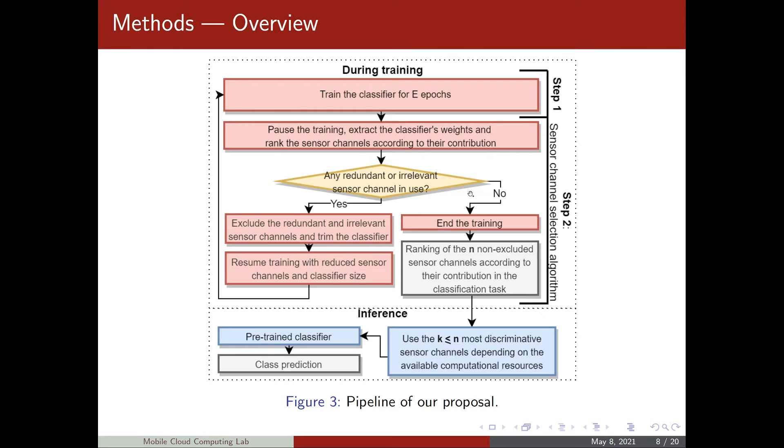When there are no more redundant or irrelevant sensor channels in use, we end the training and with an algorithm, we rank all the non-excluded sensor channels according to their contribution to the classification task. During inference time, we can use all the non-excluded sensor channels or a subset of them according to the available computational resources.